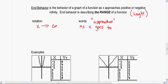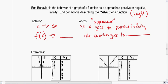As x goes to positive infinity, the second part of the notation is what's happening to the range or the function itself. The function goes to whatever it goes to. So in words, as x goes to positive infinity, the function goes to whatever it goes to.